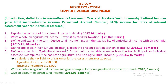This chapter includes the following items: Introduction, Definition, Assessee, Person, Assessment Year and Previous Year, Income, Agricultural Income, Gross Total Income, Taxable Income, Permanent Account Number (PAN), Income Tax, and Rates of Relevant Assessment Year for Individual Assessee.